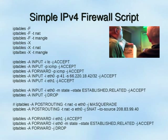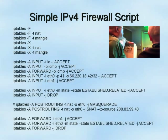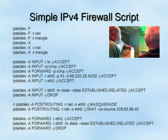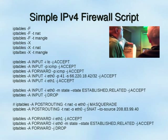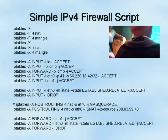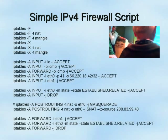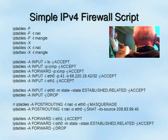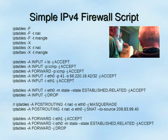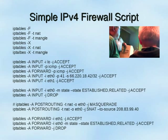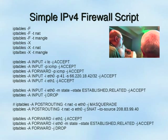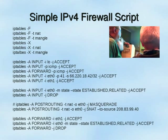For the input chain on the external interface, I allow only established and related packets and drop everything else. For post routing, since I have a static IP I use SNAT rather than masquerade — I SNAT my source on the outside for everything going out eth0. In the forward rules, I forward everything that eth1 on my internal interface wants to forward out to the internet, allow established and related back in, and drop everything else.